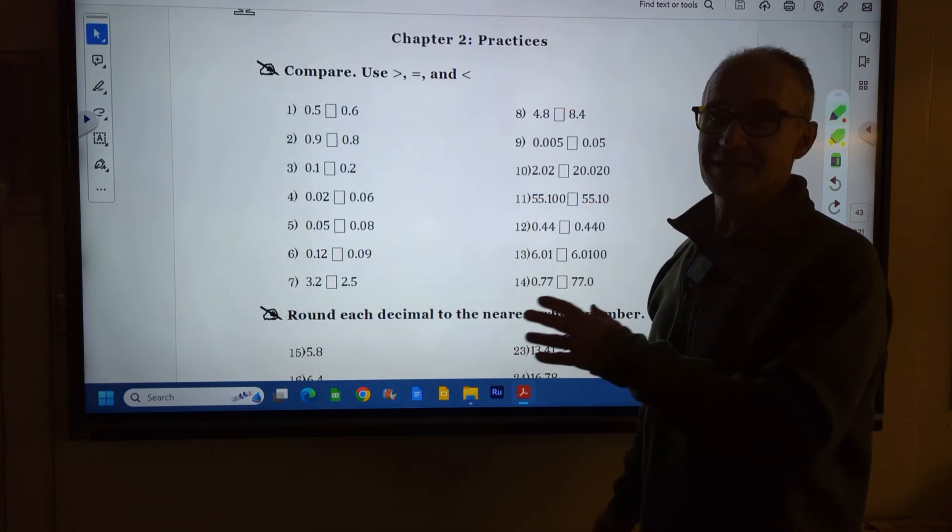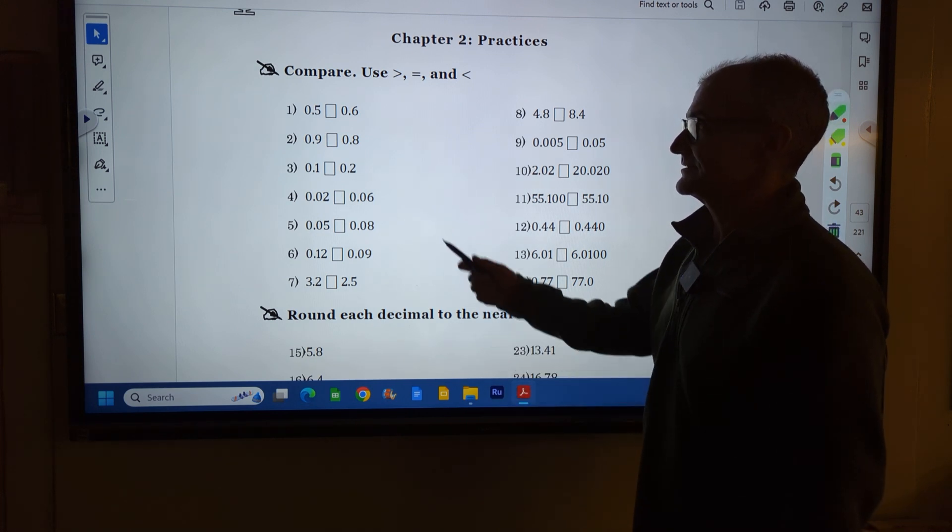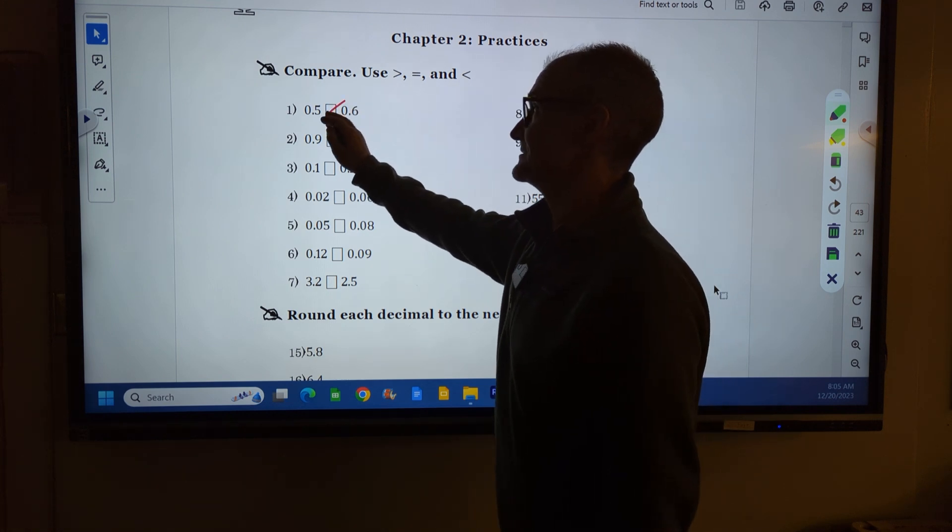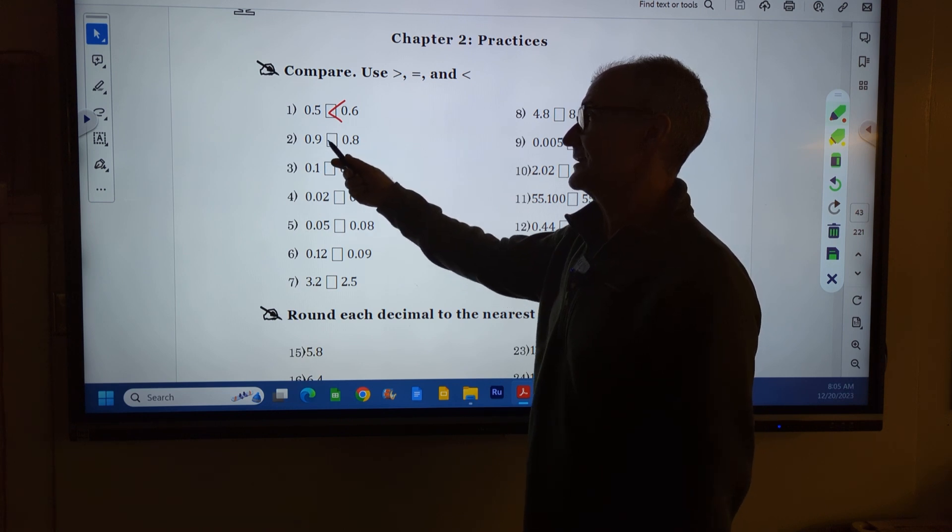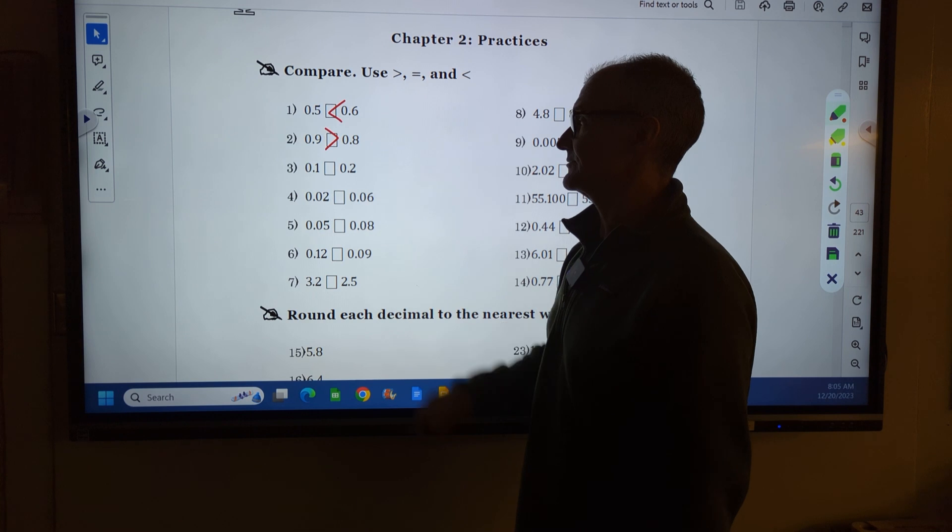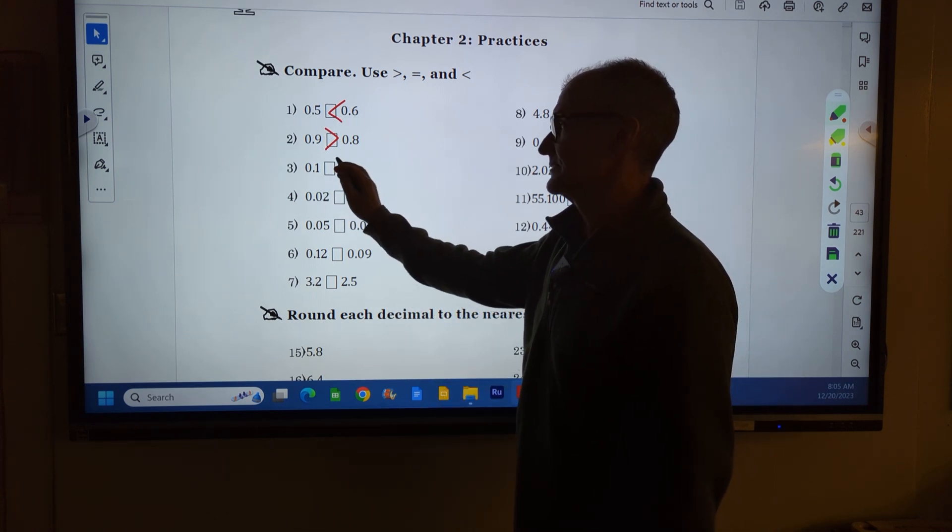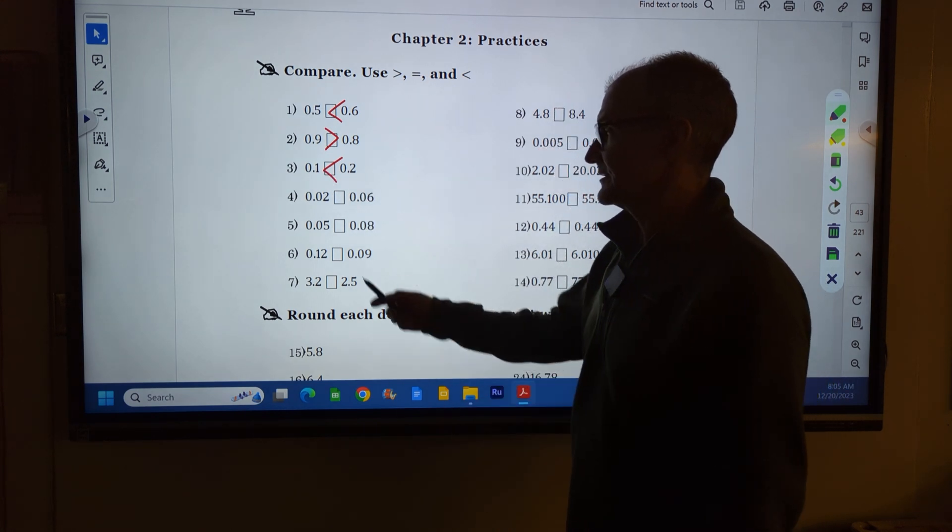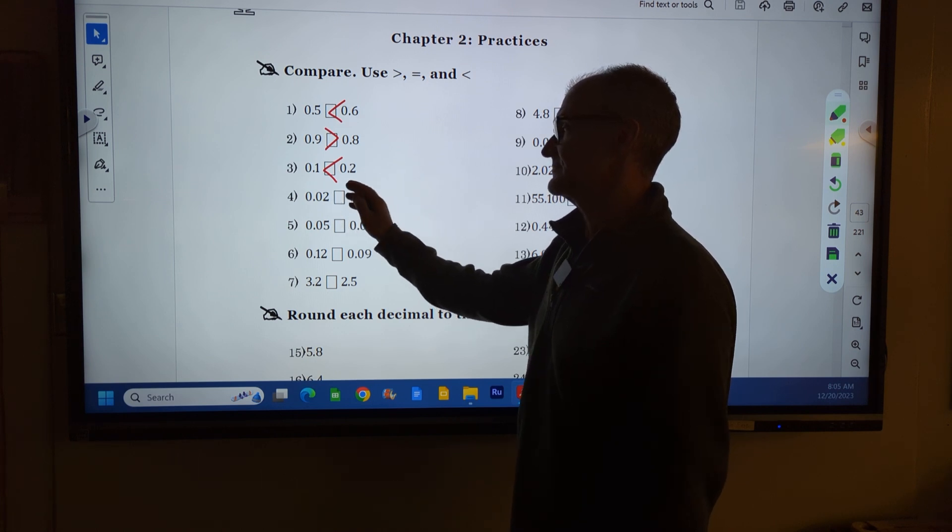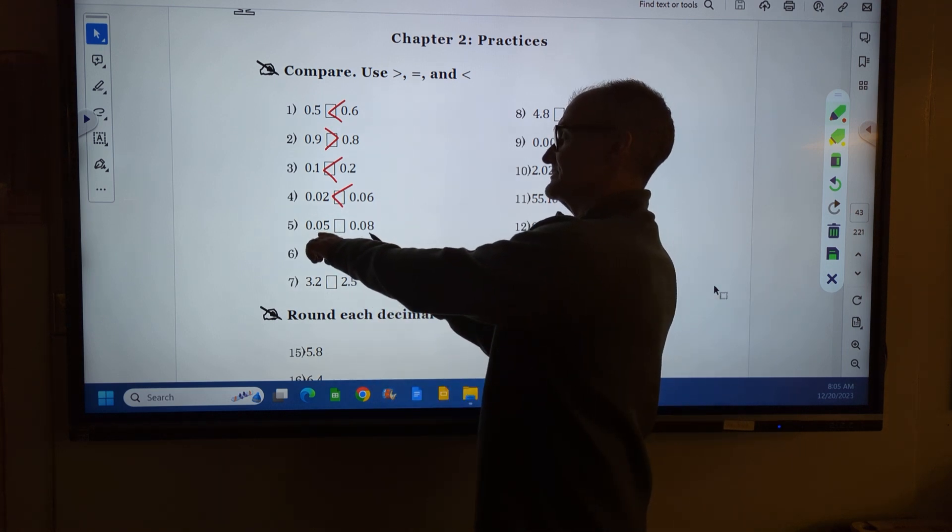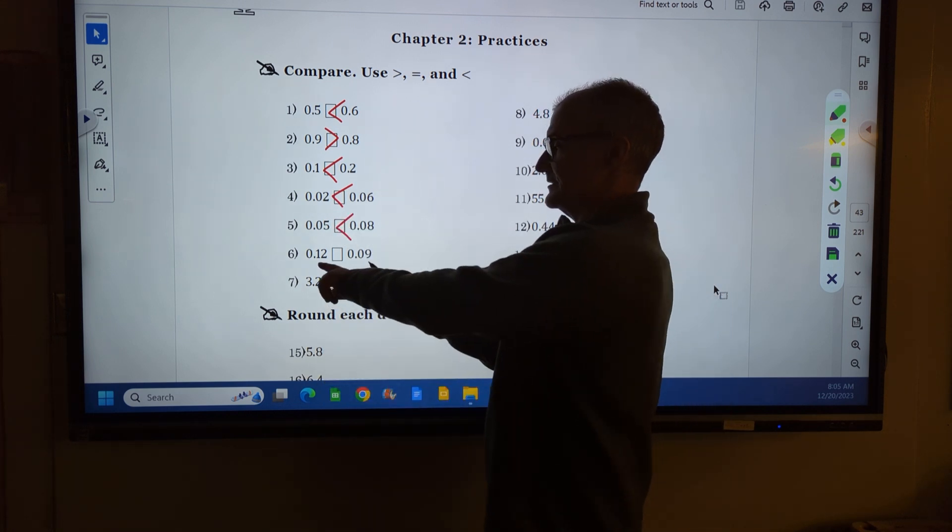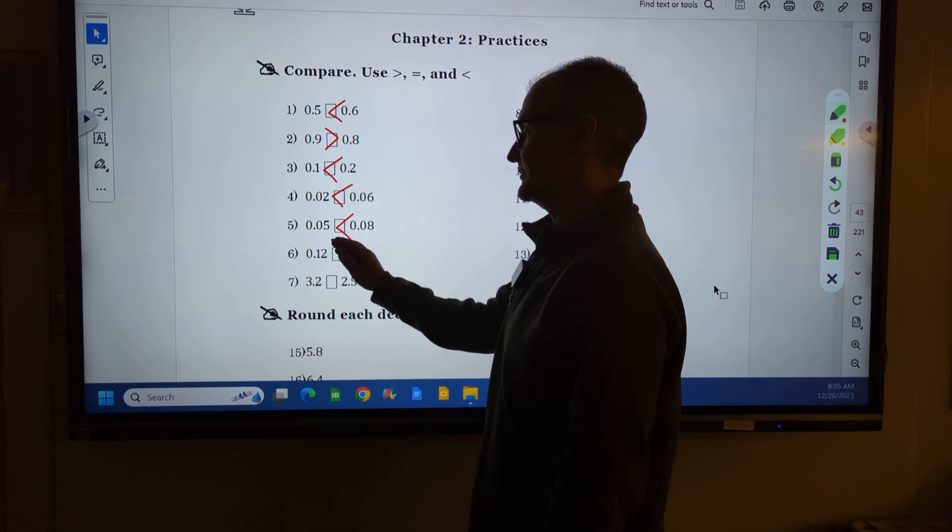Pause the video, do these problems, and unpause it. Looking at number 1, is .5 or .6 greater? .6 is greater, we're just in the tenth place. Number 2: .9 is greater than .8. The arrow, the larger part goes to the larger number. Number 3: .2 is greater than .1. Number 4: I'm looking at the tenth place, 0 and 0, they're the same. So I go to the hundredths place, 2 or 6. 6 is greater than 2. Number 5: The tenth place is the same, so I go to the hundredths place. 8 is greater than 5. Number 6: I have a 1 or 0 in the tenths. One's the larger number, so that one's greater.